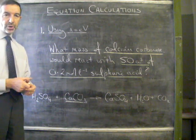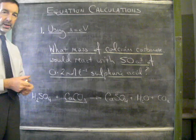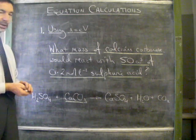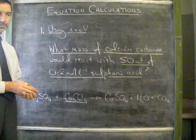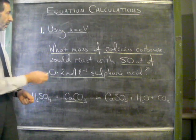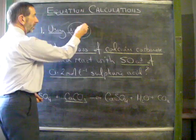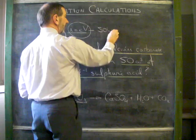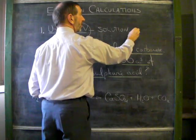Calculations based on equations are the most common kind of calculation in higher chemistry. There are various ways to tackle these. It depends on how you interpret them all. The calculation here uses this well-known equation, n equals cv. We use this when we're dealing with a solution, such as an acid or an alkali.